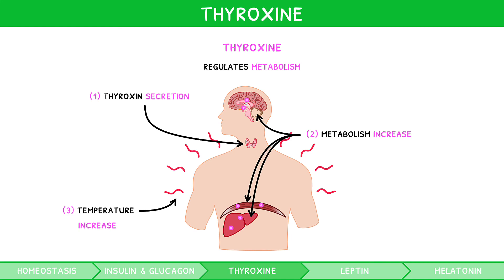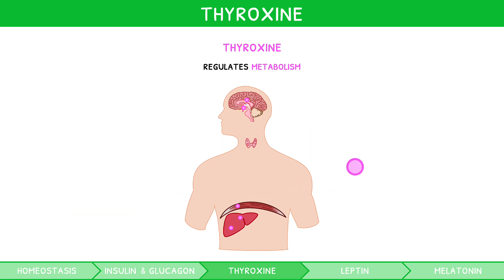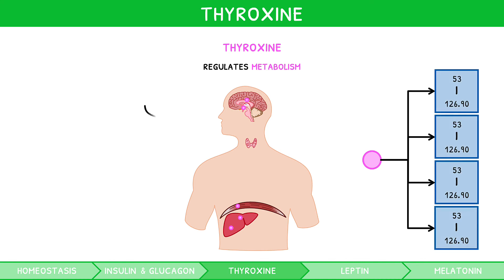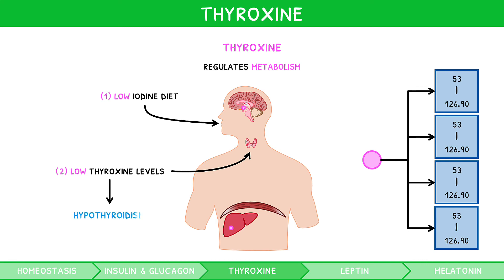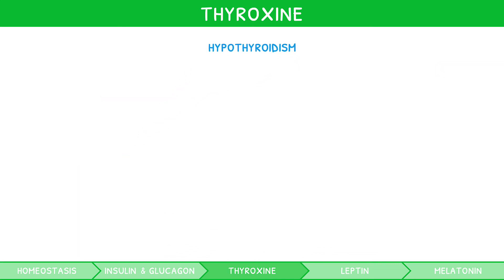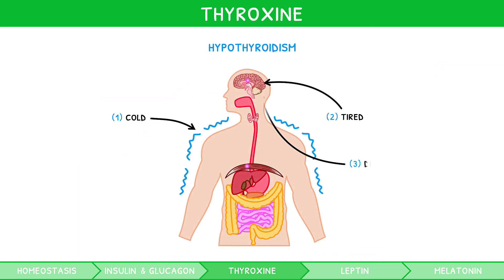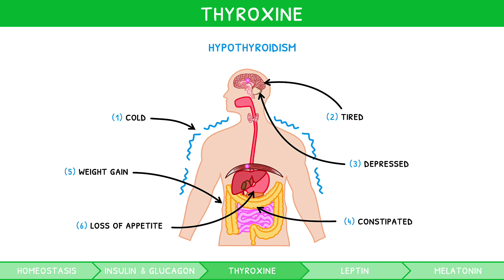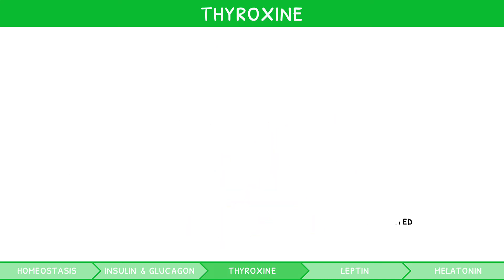This is therefore another negative feedback cycle. However, just like glucose, this cycle can be disturbed. A molecule of thyroxin contains four iodine atoms, so a diet lacking iodine can result in low levels of thyroxin. This is known as hypothyroidism, and whilst you don't need this name for your exam, you must recognise the symptoms: feeling cold, tired, depressed, constipated, and experiencing weight gain despite a loss in appetite. Whilst a dysfunctional thyroid can cause changes to your appetite, the main regulation of your appetite is conducted by another hormone known as leptin.